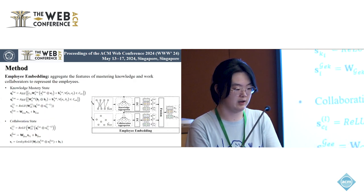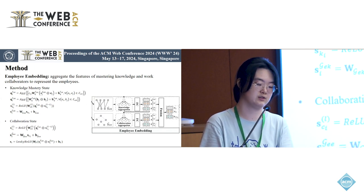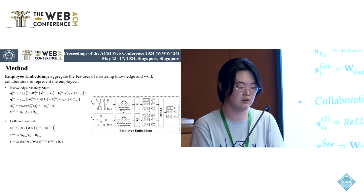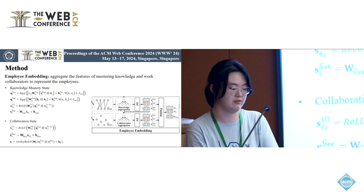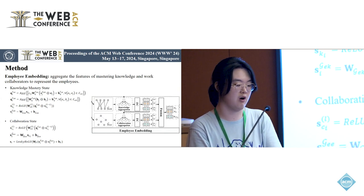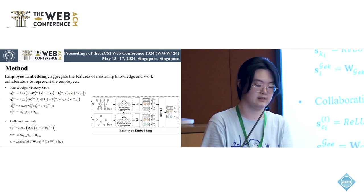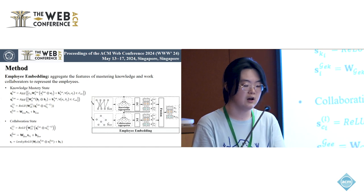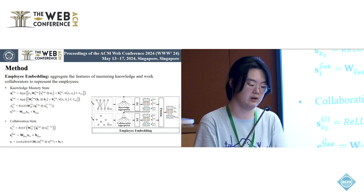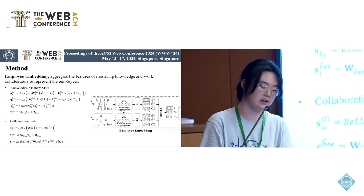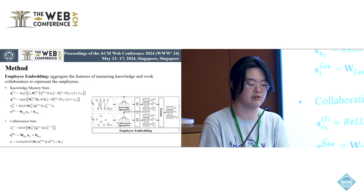In the employee embedding model, we aggregate the features of mastery knowledge and work collaborators to represent the employees. The state of knowledge mastery portrays the current knowledge structure of the employees, which allows inferring more accessible knowledge based on already acquired knowledge. Collaboration records of employees indicate collaborators and collaboration frequency. We intend to consider the features of work collaborators for better employee representation. After aggregating knowledge mastery and collaboration features, we concatenate them and make another transformation for employee representation.